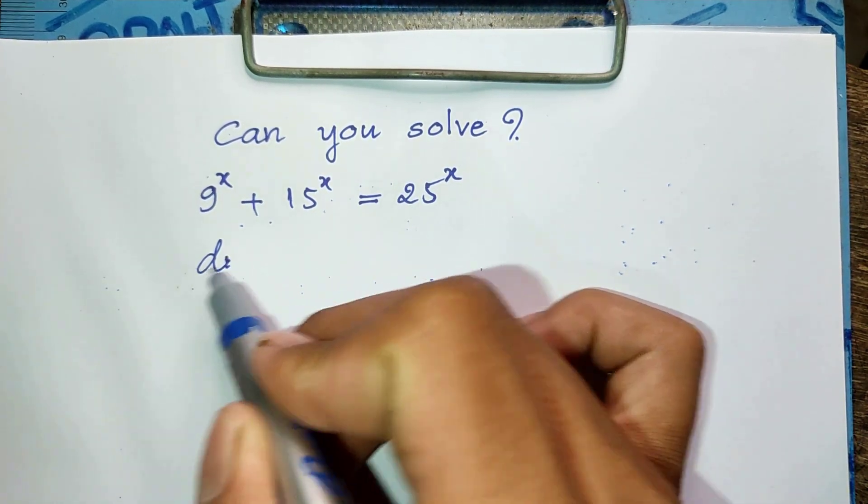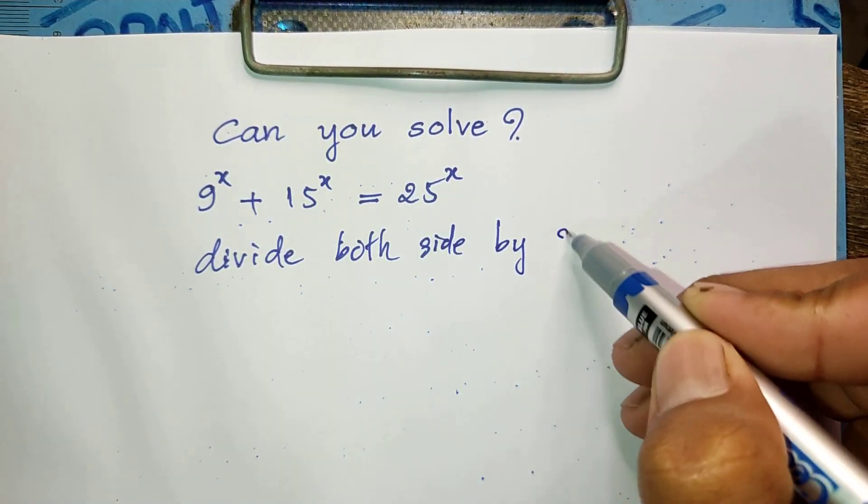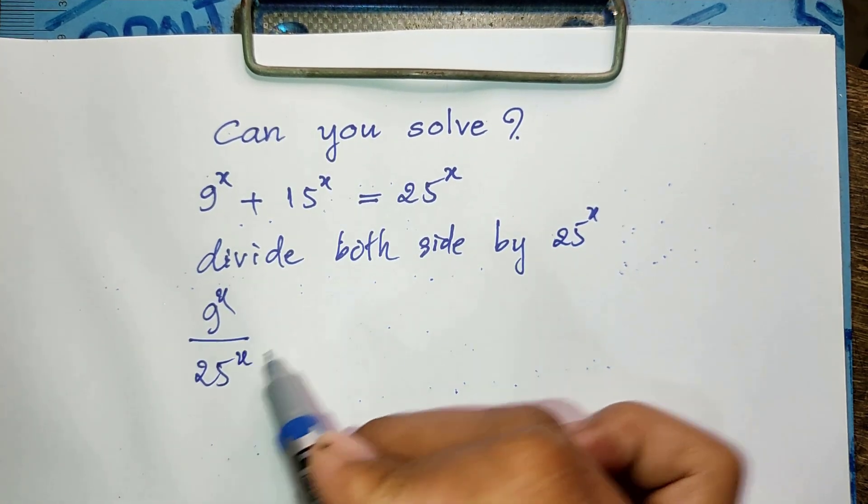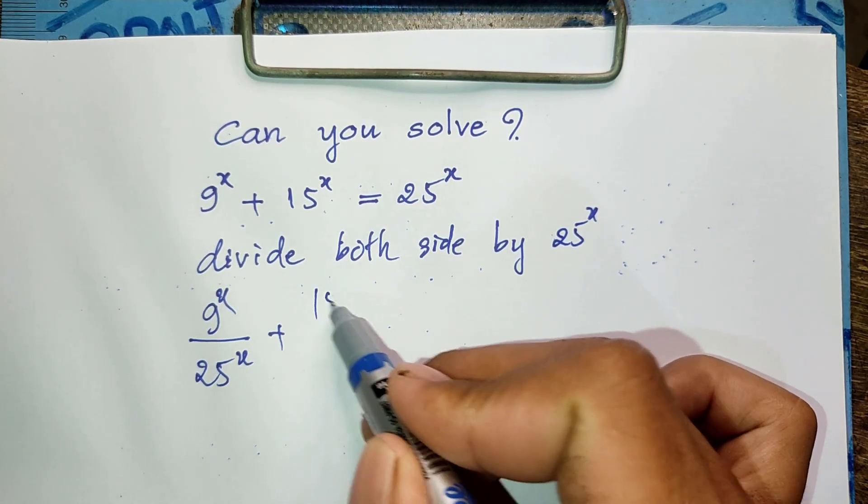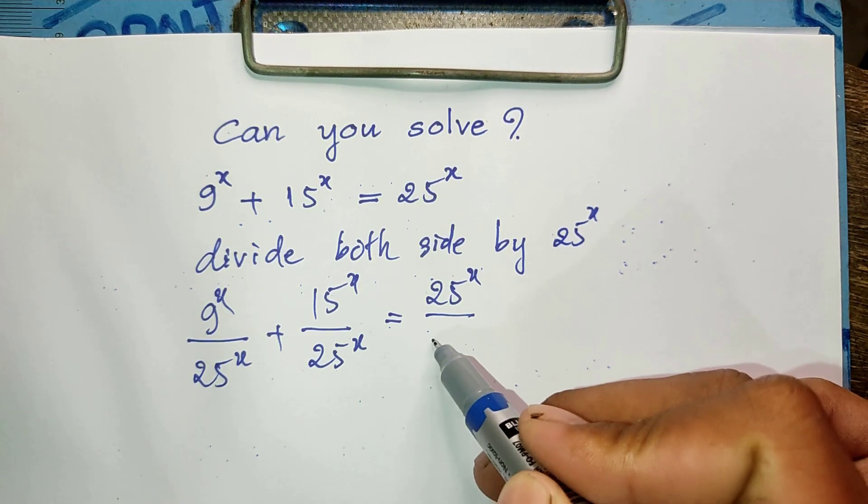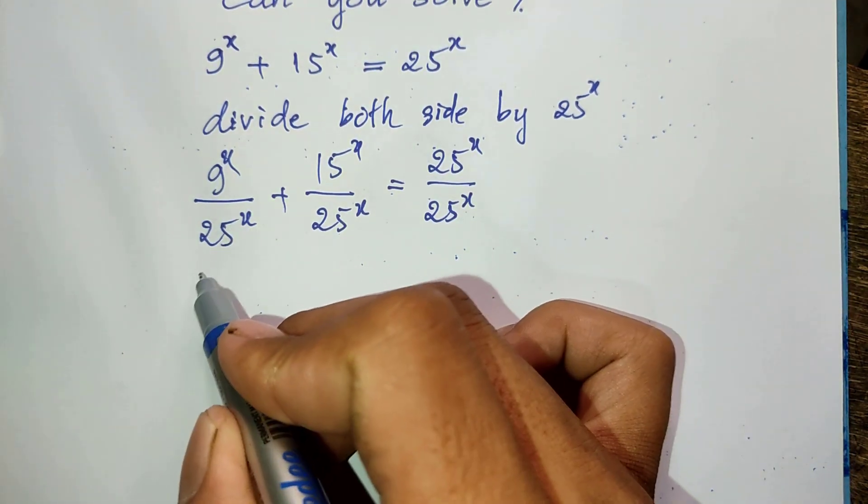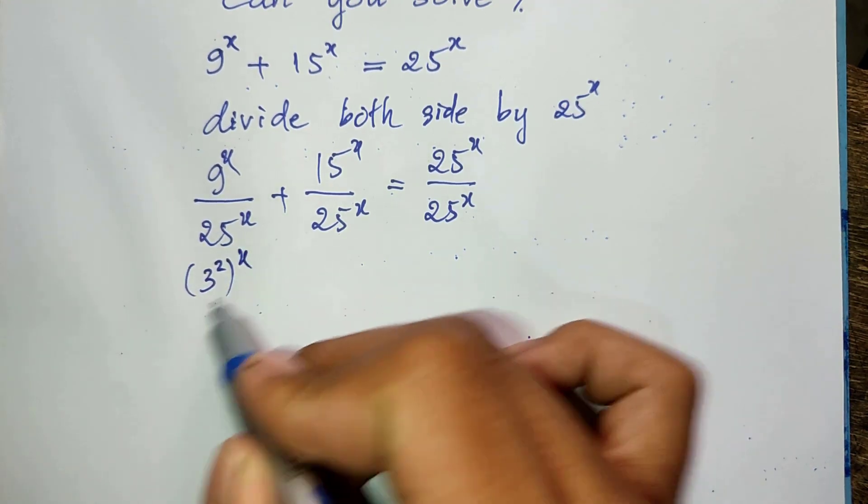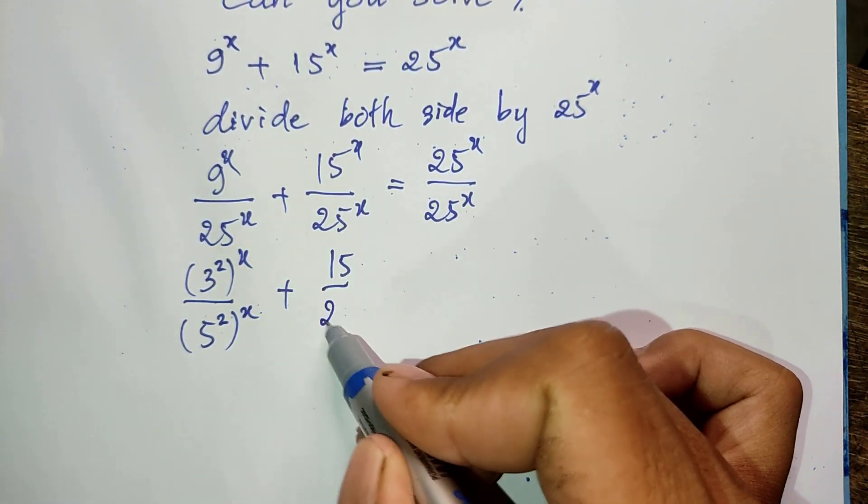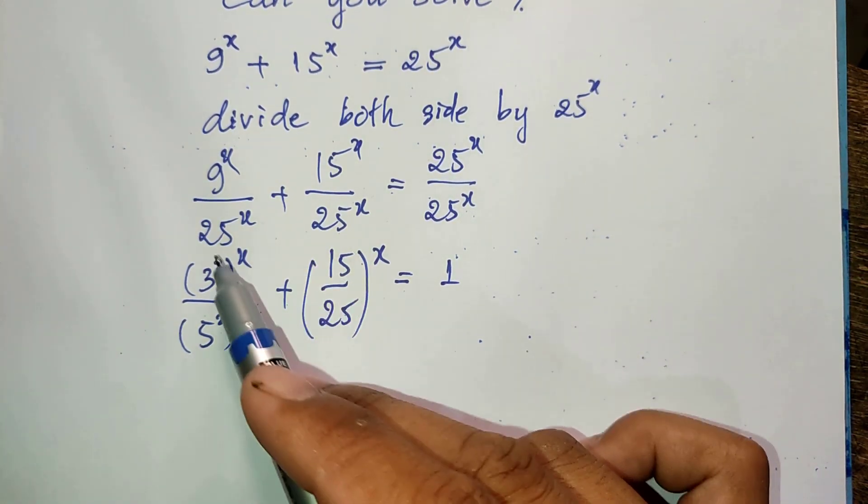Now I divide both sides by 25^x. So now this I can write as 9^x divided by 25^x plus 15^x divided by 25^x equals 25^x divided by 25^x. This I can write as (3²)^x divided by (5²)^x plus (15/25)^x equals 1. You will see this pattern emerge.